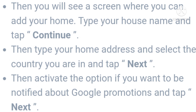You will then see a screen where you can add your home. Type your house name and tap Continue, then type your home address. Select the country you are in and tap Next.